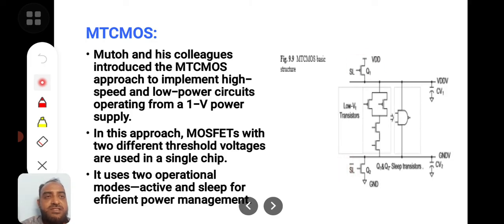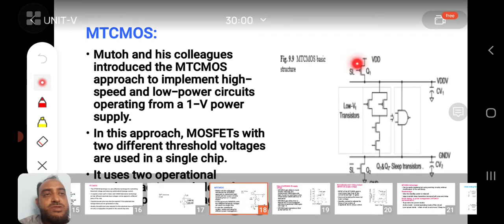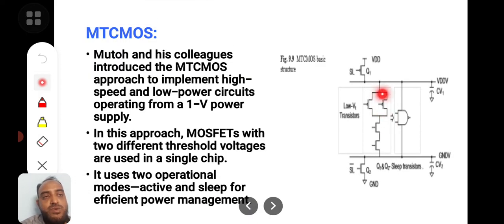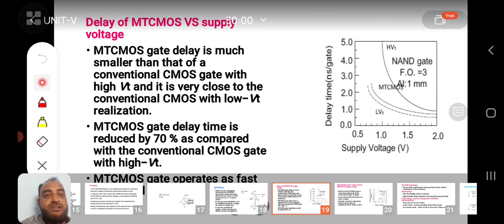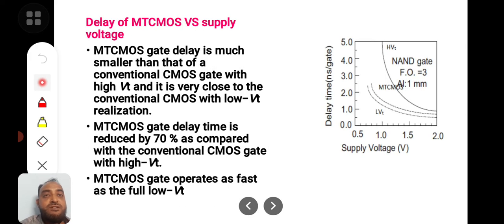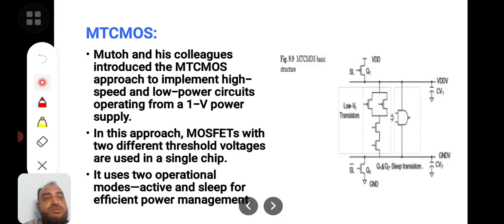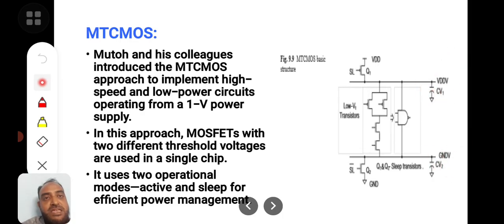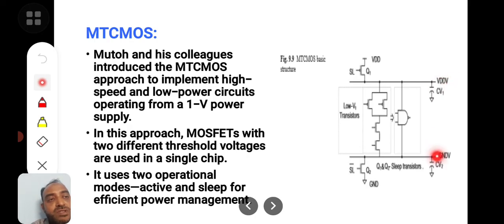In this circuit, two modes are there: active mode and sleep mode. Consider a two-input NAND gate with low-threshold voltages, and another transistor with high-threshold voltage. The logic circuit is not directly connected to the supply and ground, but is connected to virtual supply (VDDV) and virtual ground (GNDV) lines. The actual supply line is connected to two high-VT transistors controlled by a sleep control signal.